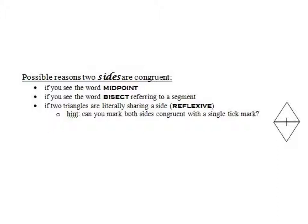If two triangles are literally sharing a side, like these two triangles here, then obviously they actually share a side and that side will be congruent. When we talk about the reason for saying that, we're going to say the reflexive property. The reflexive property basically says that a line segment is congruent to itself.